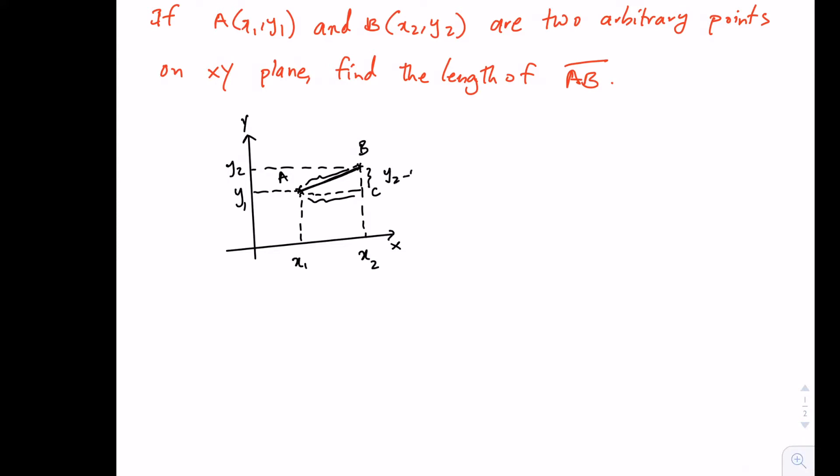So this length is y2 minus y1 and this length is x2 minus x1. So we can write AB squared, which is the length of the line segment AB, equals to x2 minus x1 squared plus y2 minus y1 squared. And therefore AB is square root of x2 minus x1 squared plus y2 minus y1 squared.